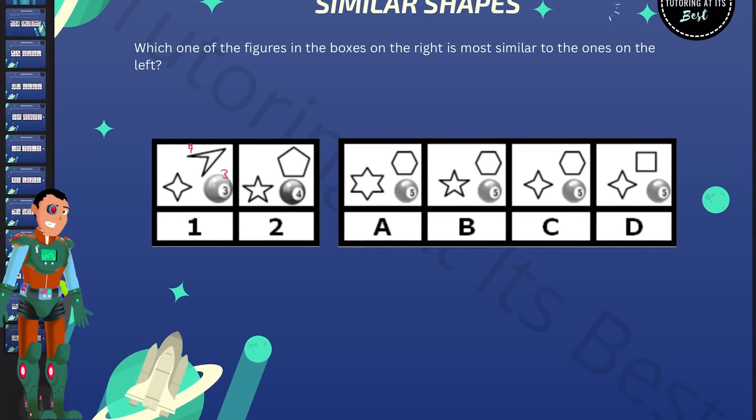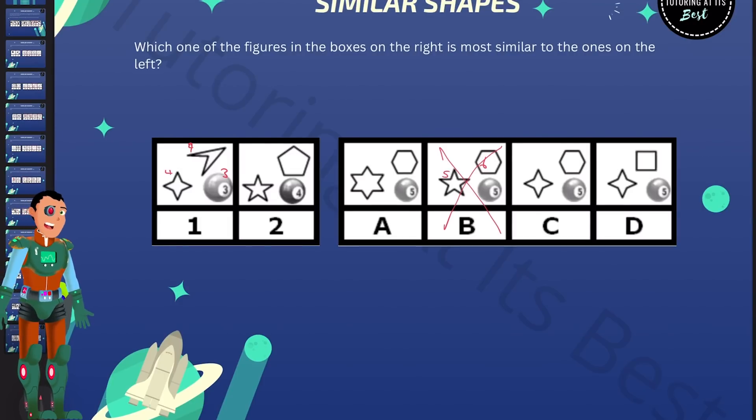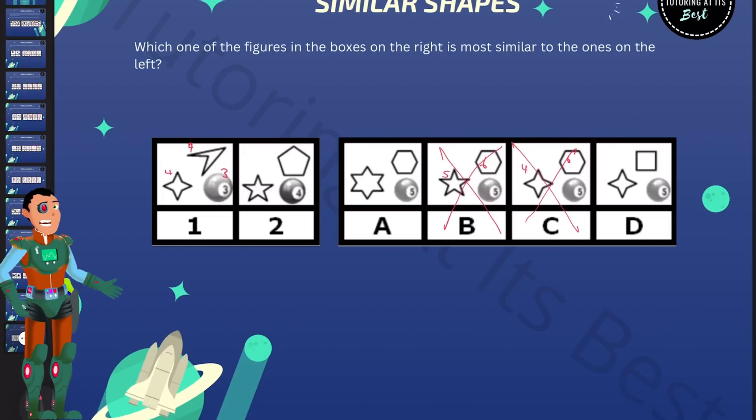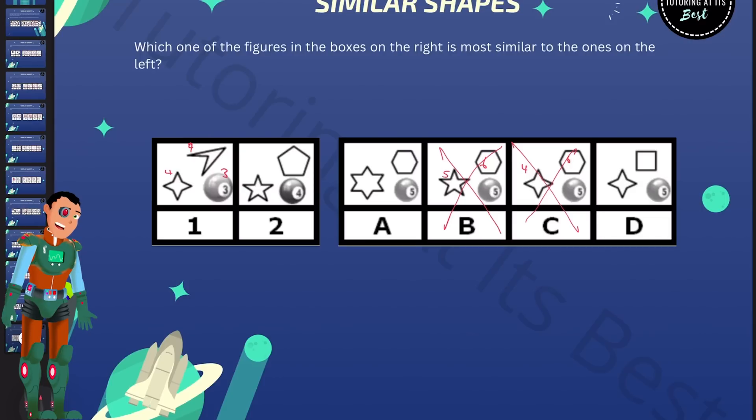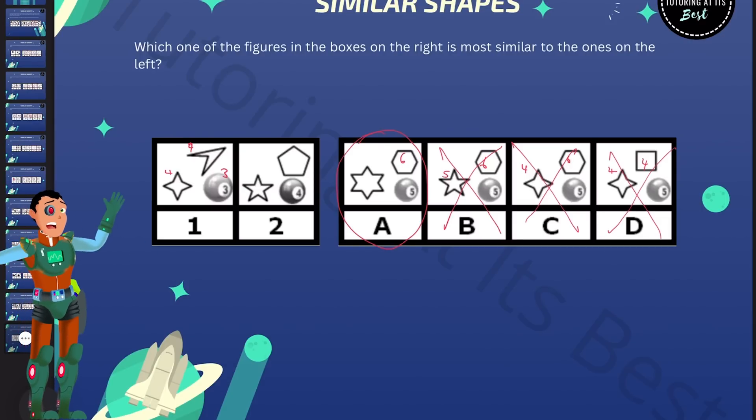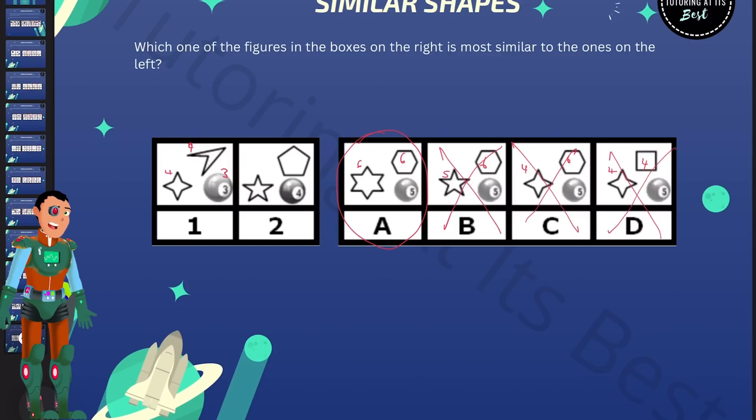If we take a look at box B, it looks as if that's a five sided pointed star and a six sided polygon. So the shapes don't match. If you look at C, that has a four pointed star and a six sided polygon. So that doesn't work. And likewise with D, it has one number more than the other two shapes. So that means A is our answer as we have a six sided shape and we have a six sided pointed star. Marvelous work. And that brings us to the end of our video.